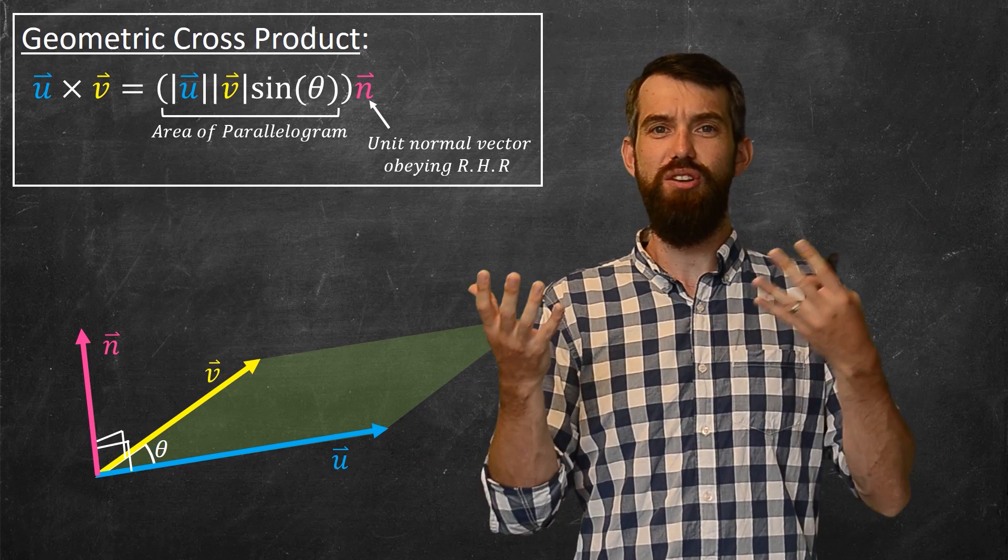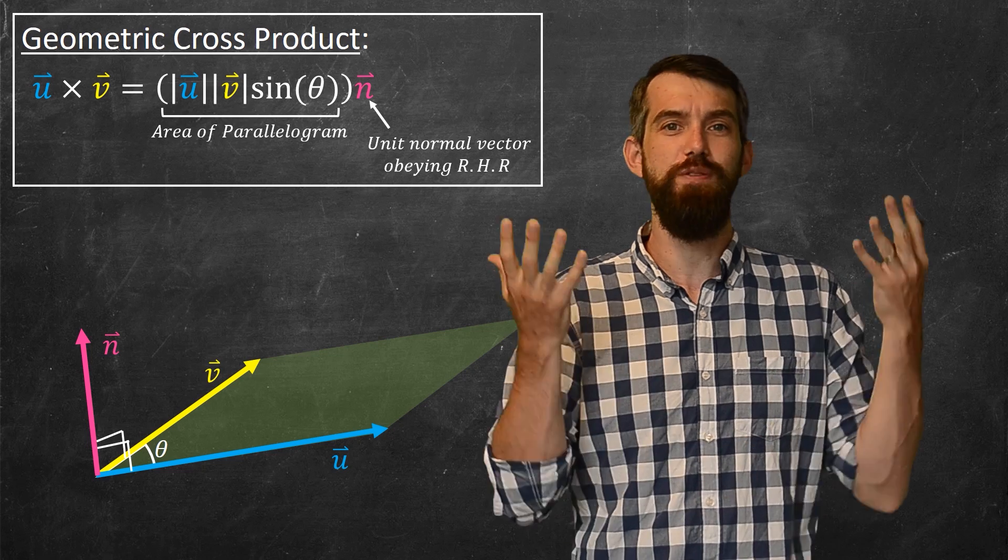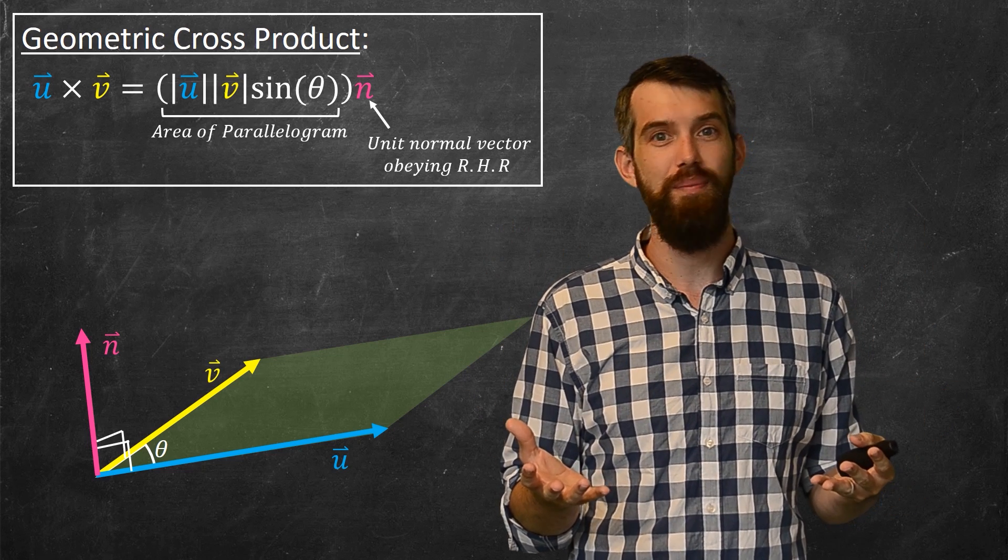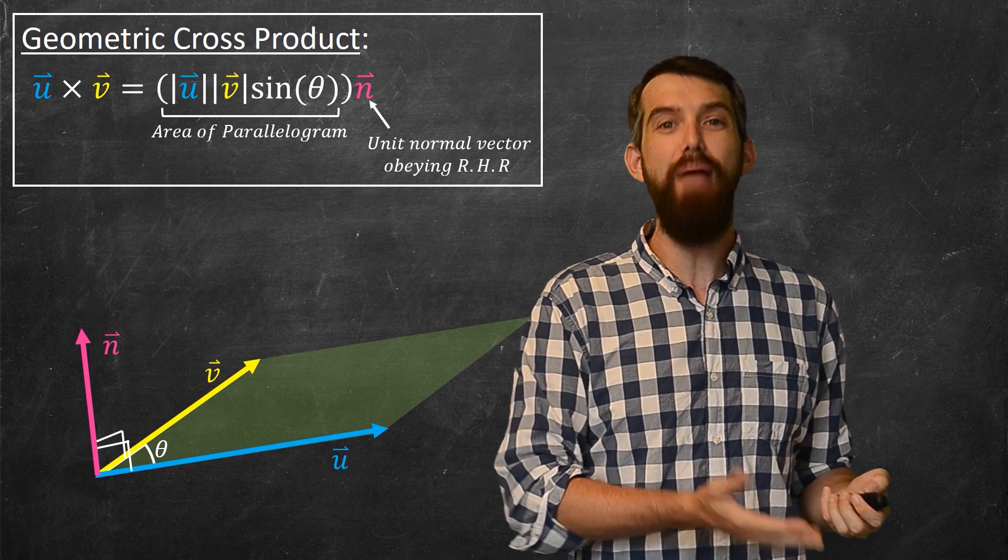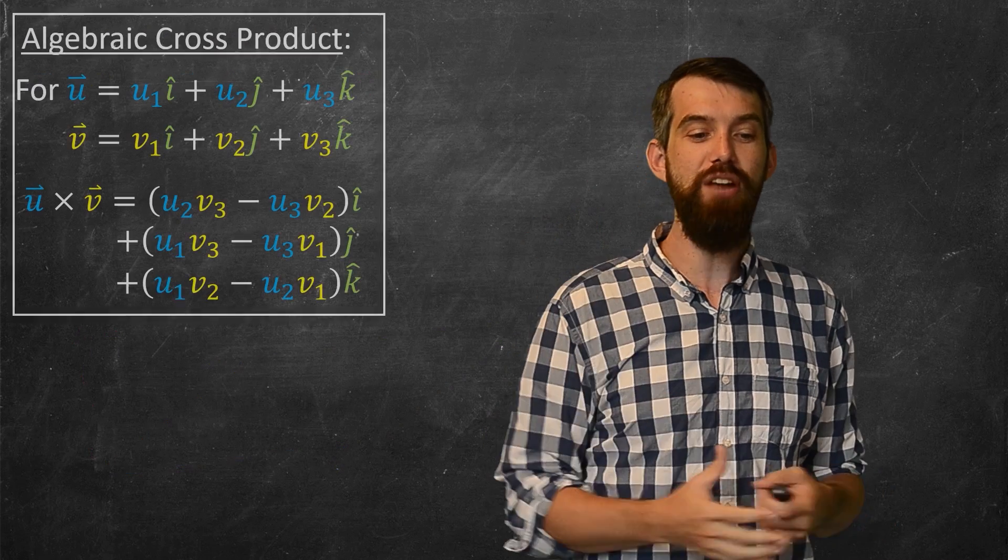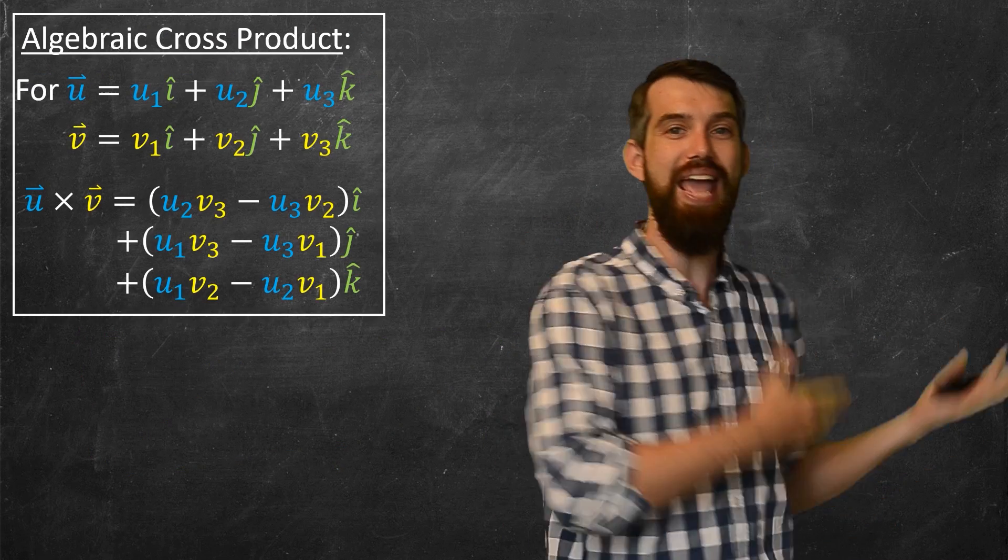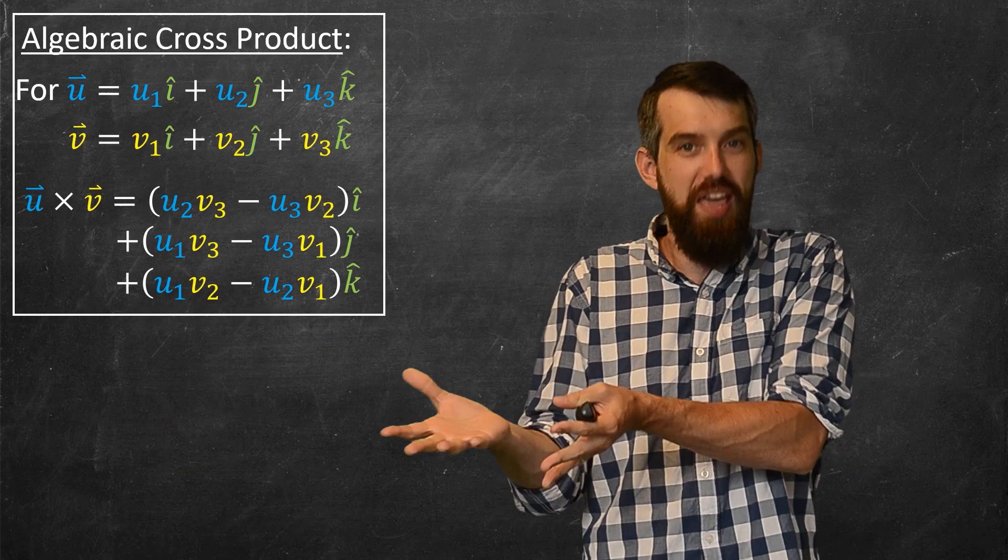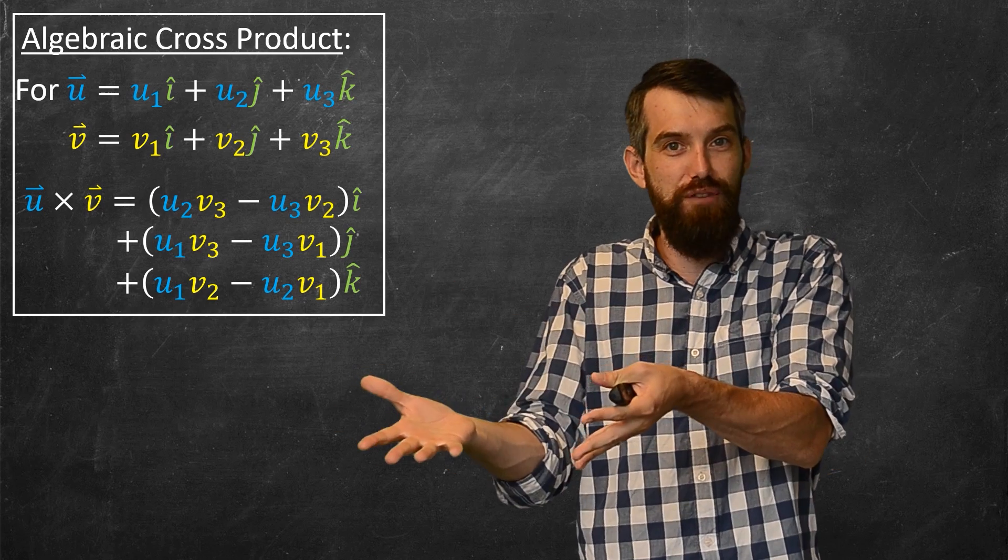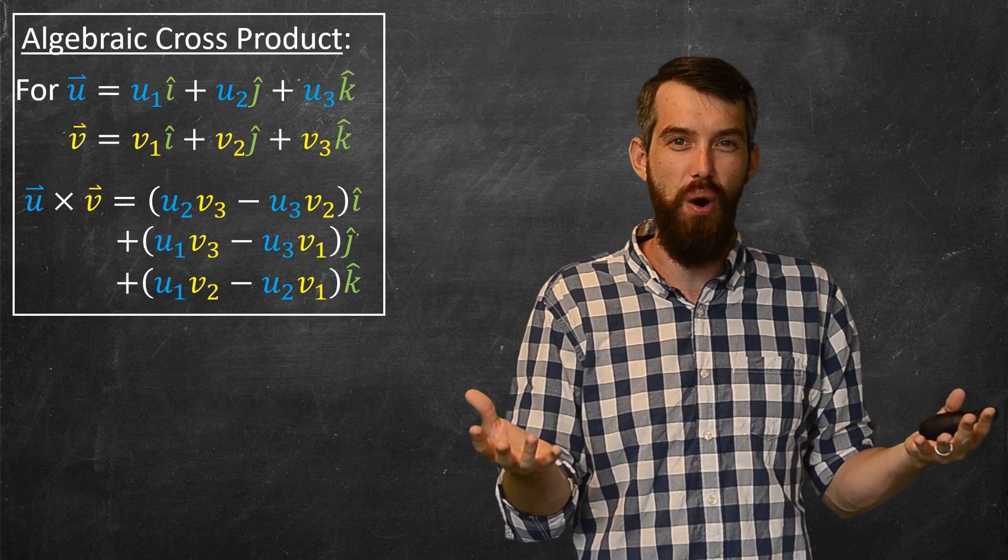So this is very convenient. This cross product we've defined this way solves both of these different problems, but how do you compute it? Now I'm going to put up on the screen the geometric cross product, and it gives an answer for some easy to compute thing that just spits out the numbers if you know what the u and what the v are.